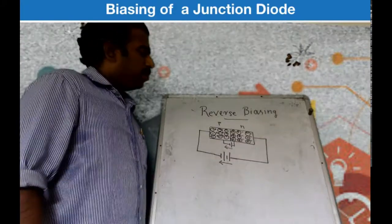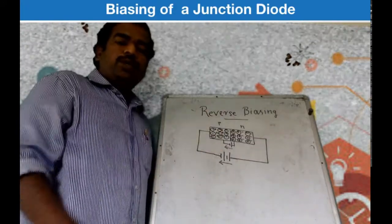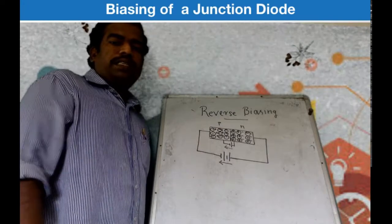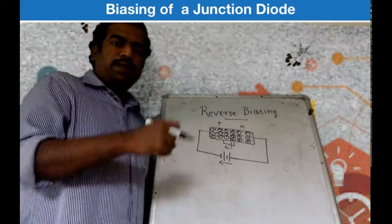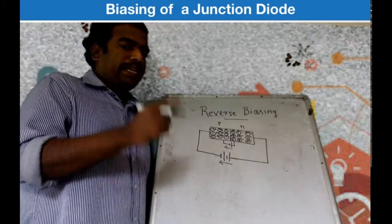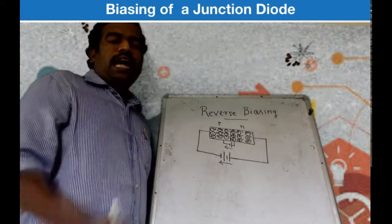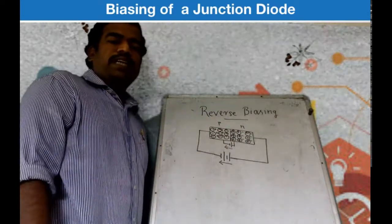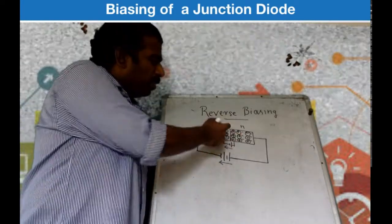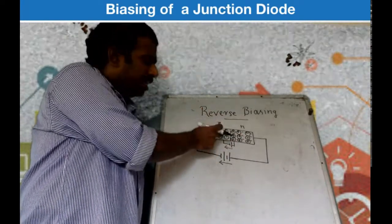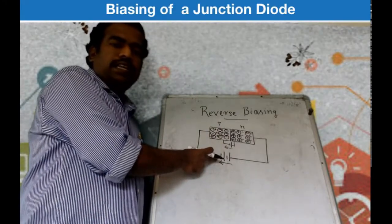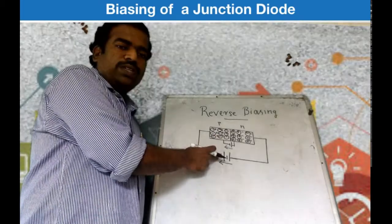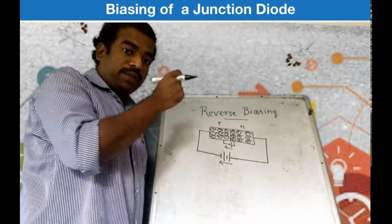However, thermally generated electrons exist in the region. When temperature increases, the covalent bond breaks, creating an electron that is a minority carrier in the P region. That minority carrier electron is attracted toward the negative terminal, and the minority carrier hole is attracted toward the positive terminal.